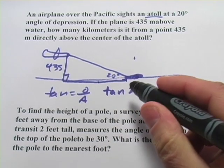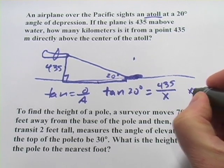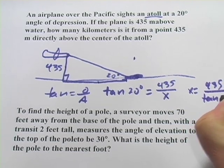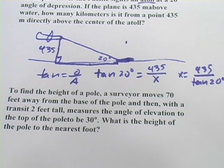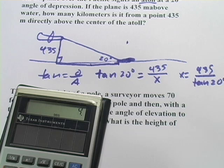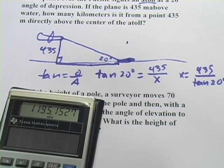Now, we can multiply both sides by x, then divide both sides by the tangent of 20. What we get is x equals 435 divided by the tangent of 20 degrees. And then we can grab our calculator and figure that out. So we're going to get 435 divided by tangent 20 equals, and we get 1,195.